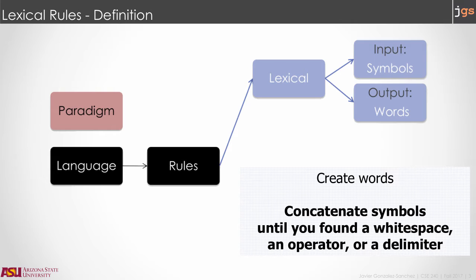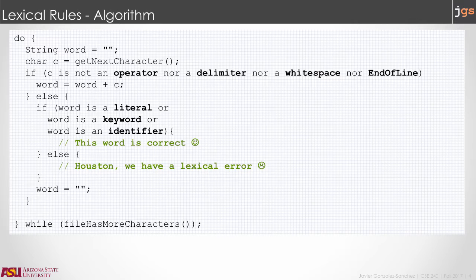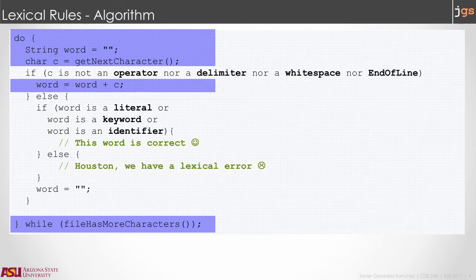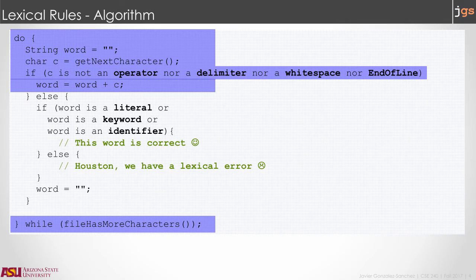Lexical rules tell us how to combine symbols — letters, numbers, and so on — to create words. Usually you separate words with white spaces, operators, or some delimiters. When reviewing a program for lexical correctness, you read character by character and put characters together to create words unless you identify an operator, a delimiter, a whitespace, or the end of the line. Those separate words and are correct by themselves.